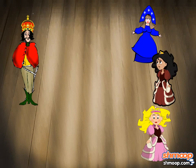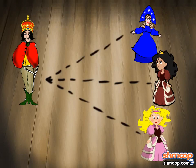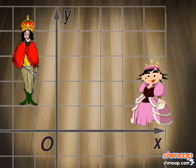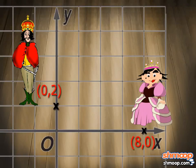Let's calculate which princess is going to tackle the prince for the first dance. If Princess Eudora is at point (8, 0), and Prince Charming is at (0, 2), we can plot the line between them.